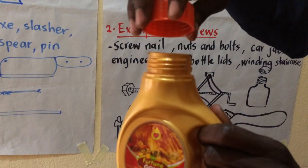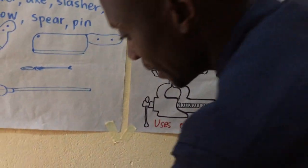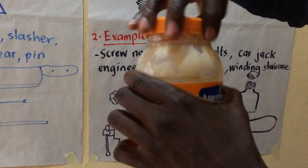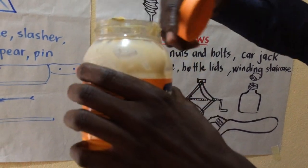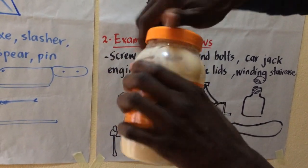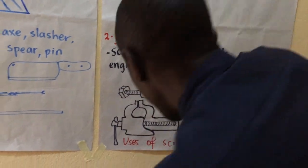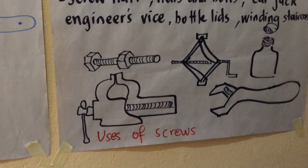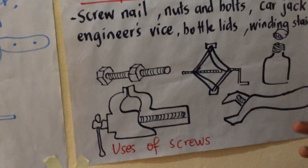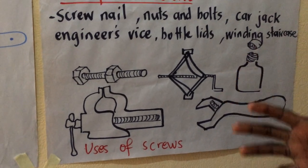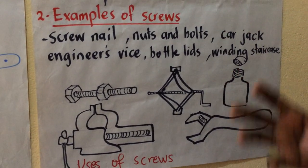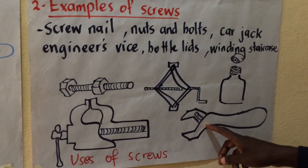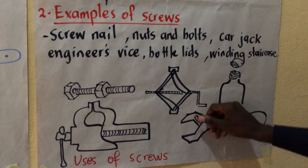You must know the importance of that bottle top — there is an inclined plane wound around that rod. Then we have the engineer's vise. The engineer's vise is used by engineers and other people like carpenters when fixing certain things together — carpenters use it to hold wood together, for example when making a door. Then we have an adjustable spanner, which also has a screw.